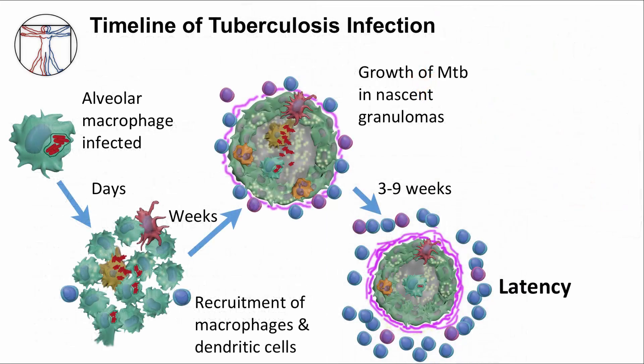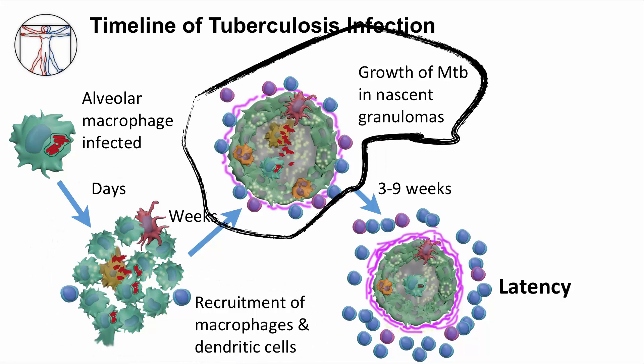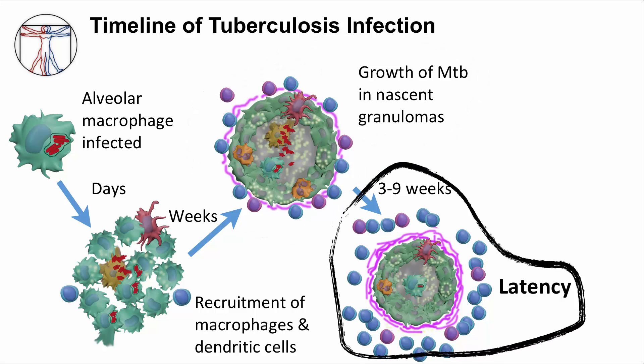TB infection is quite complex, so let's review the timeline. After alveolar macrophages engulf MTB bacilli, it is a matter of days for MTB to replicate within macrophages and neighboring recruited macrophages and dendritic cells. It takes weeks for MTB to orchestrate recruitment of immune cells and differentiation of macrophages to initiate mature granuloma formation. MTB continues to replicate within the developing granuloma. There is a long delay, around three to nine weeks, for MTB-specific T cells to arrive and proliferate at the granuloma site, finally controlling MTB replication. MTB-specific T cell proliferation and continued activation heralds the beginning of a latent state. Most MTB are killed, but a few can survive and remain latent within the granuloma.